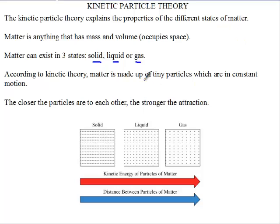According to this theory, matter is made up of tiny particles which are in constant motion. So when you take a table, the table is made up of smaller particles that are constantly moving. That is where the kinetic word comes in.